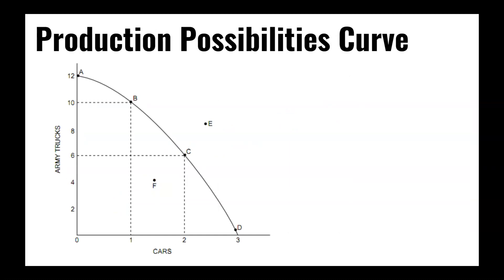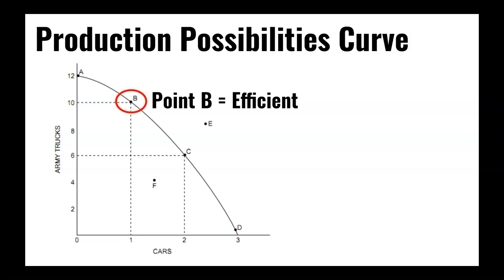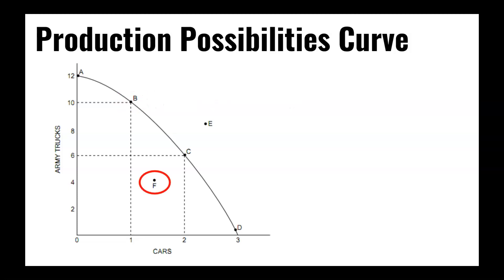All of this can be graphed on the production possibilities curve. The PPC shows all the efficient levels of production an economy can enjoy — efficient because you can't make more of one thing without making less of another. Points A, B, C, and D along that curve are all efficient; whichever the economy chooses to pursue is fine, as there's no inherently better option. Point F, inside the curve, is inefficient — you could produce more of both goods without sacrificing anything. That's essentially a recessionary gap, with room to improve quality of life without any sacrifices.